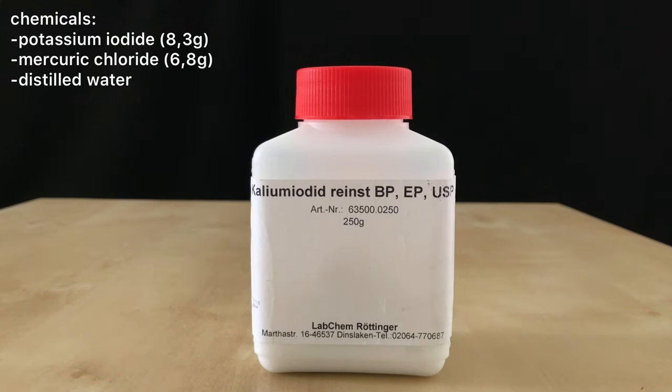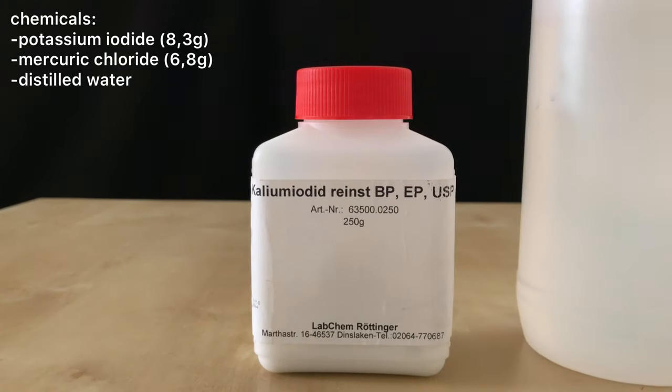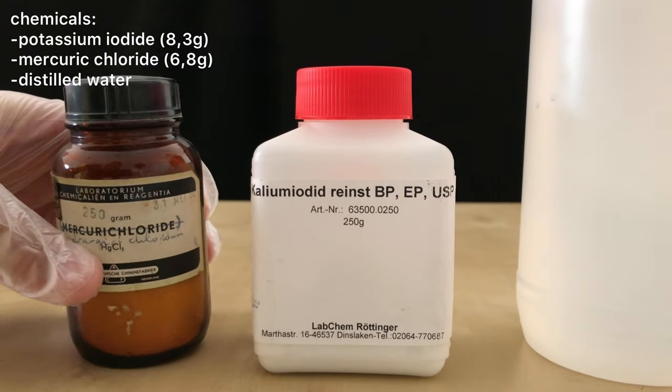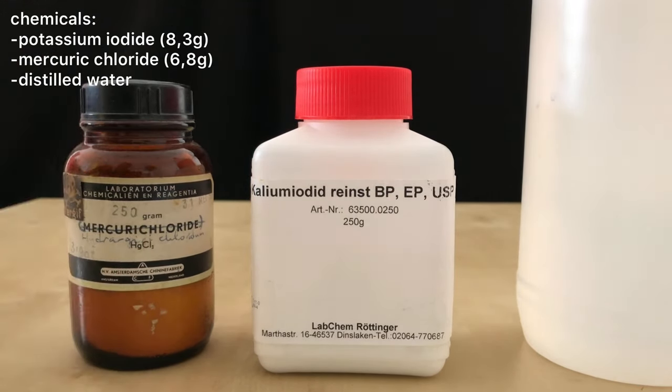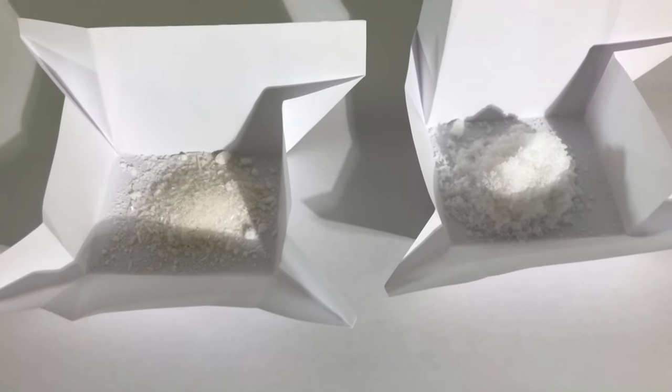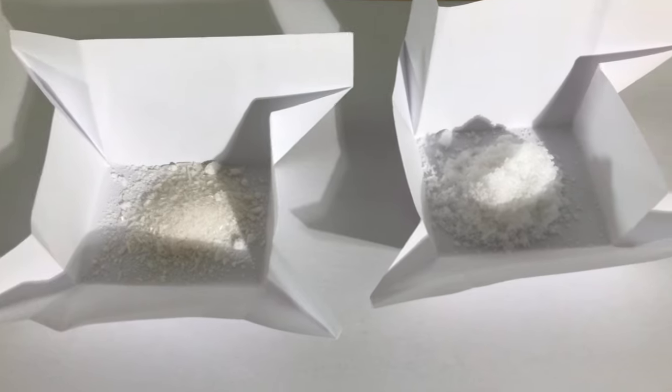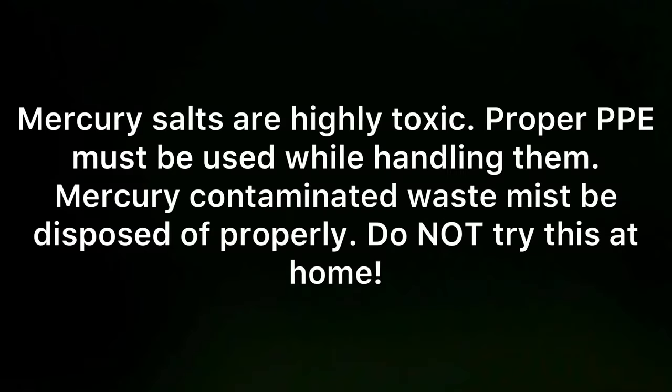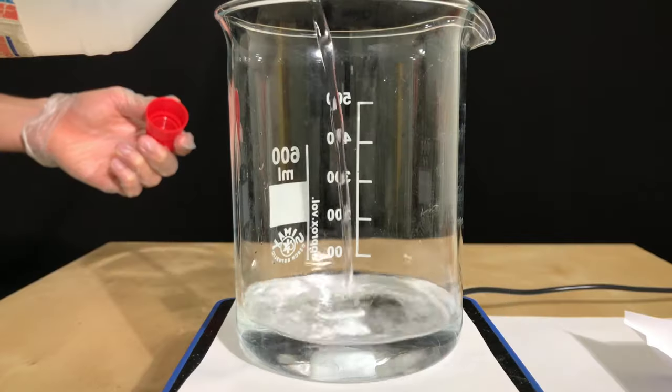For this experiment only three chemicals are needed: 8.3 grams of potassium iodide, 6.8 grams of mercury chloride which represents a small excess, and distilled water to act as a solvent. Mercury-2-chloride which you can see on the left is a highly toxic mercury salt and potassium iodide is also a white powder, but it's not as toxic as mercury chloride.